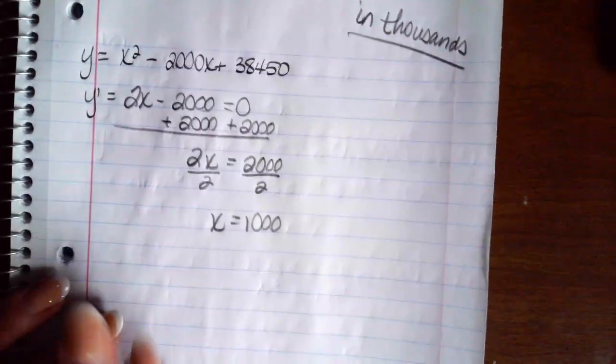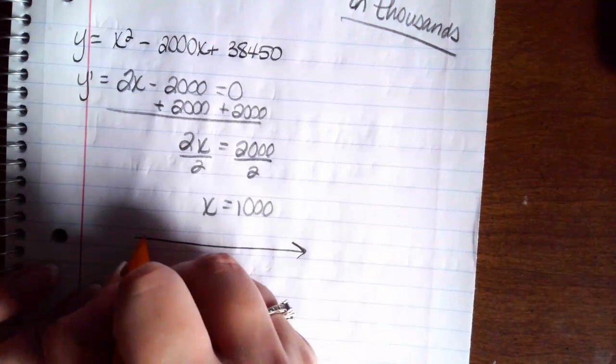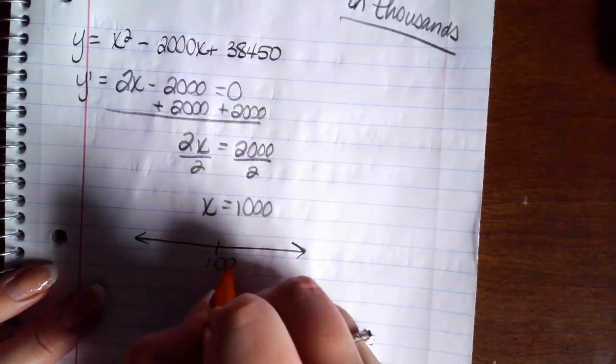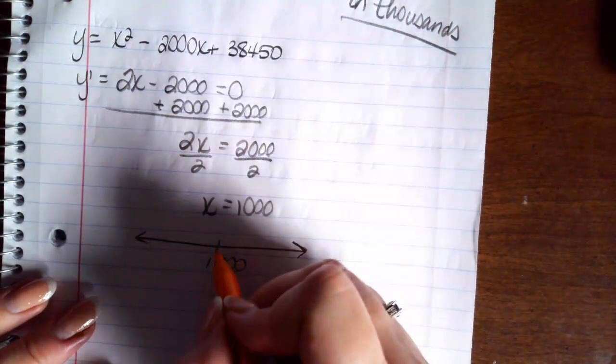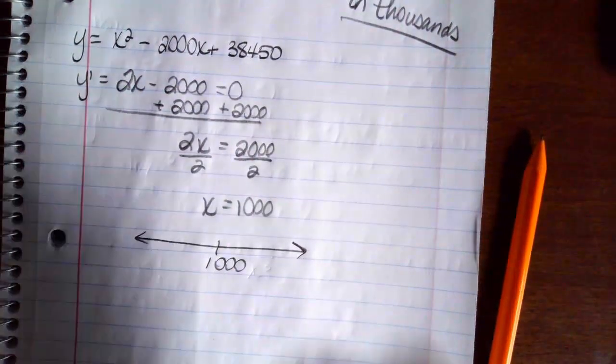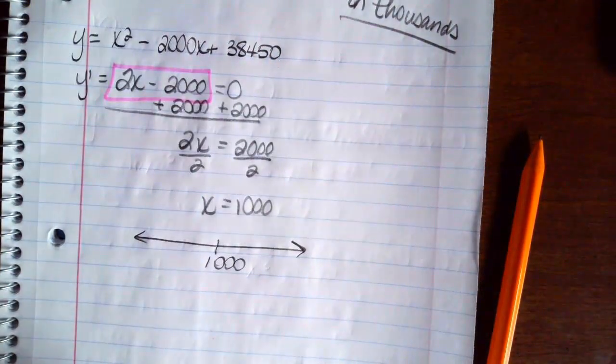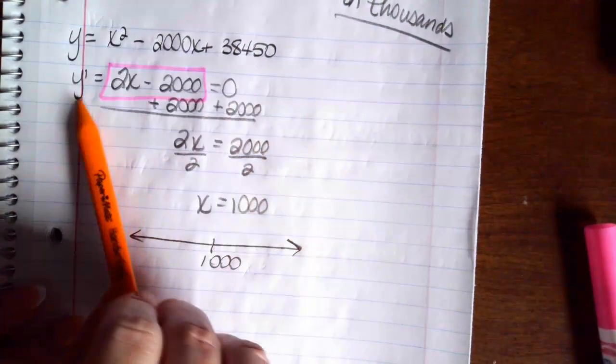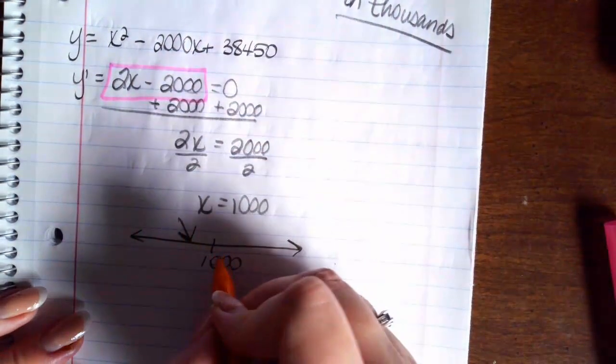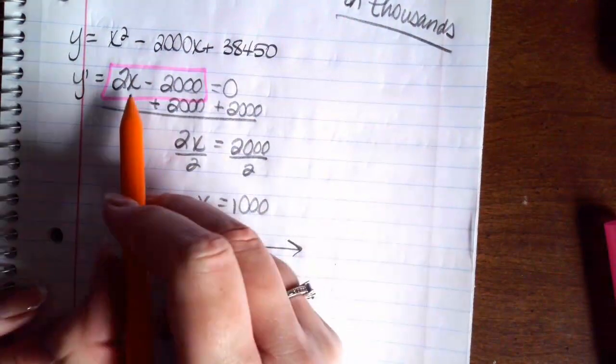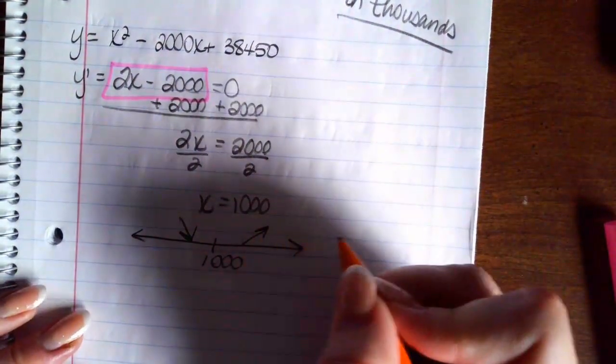So what we have is a critical number at 1,000. So we're going to grab a test point to the left and a test point to the right. So a test point to the left is going to be 0. So 0 minus 2,000 is negative. A test point to the right would be 2,000. So that would be 4,000 minus 2,000 is positive.